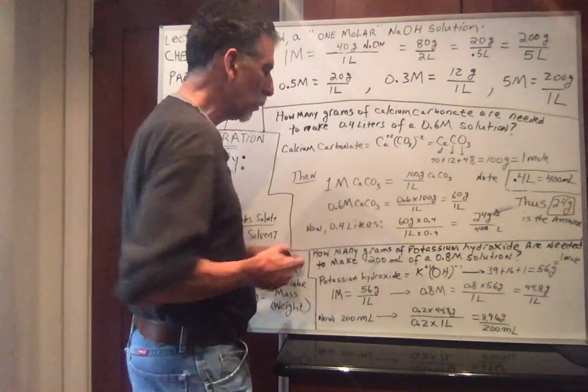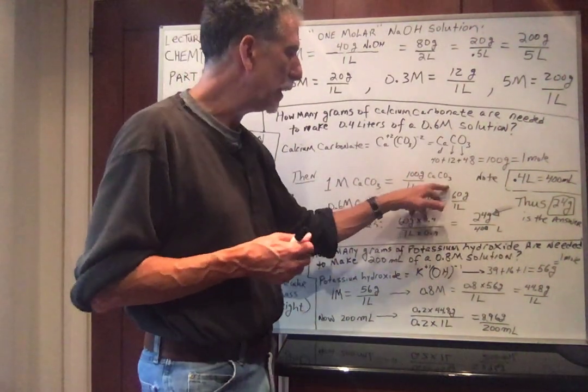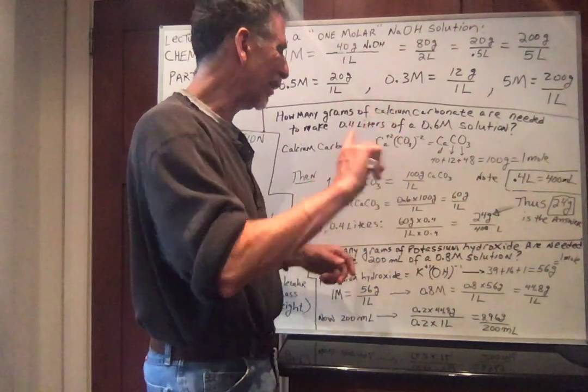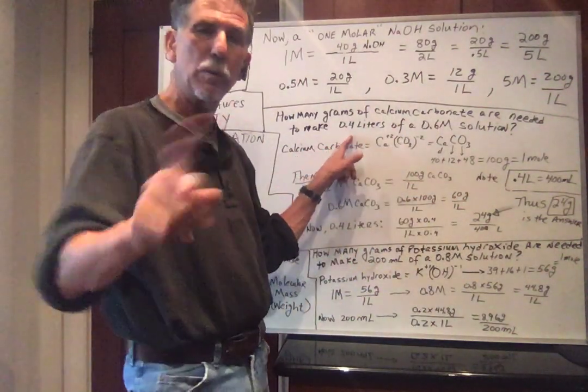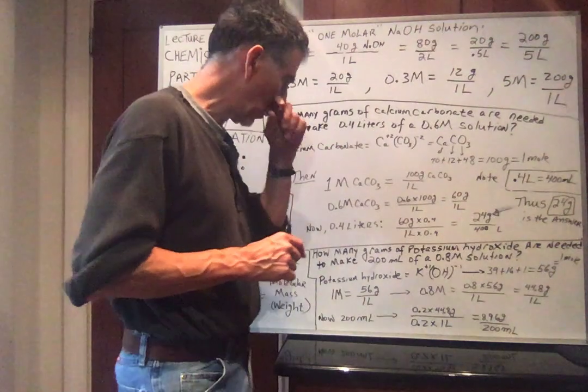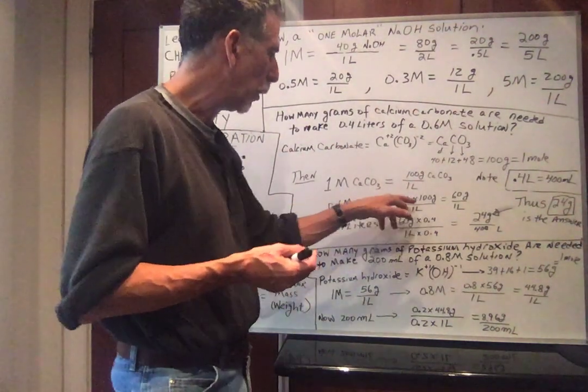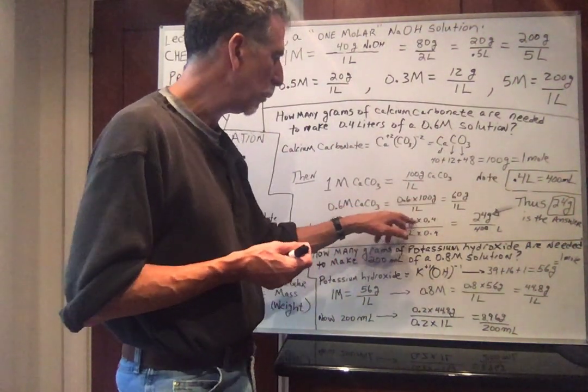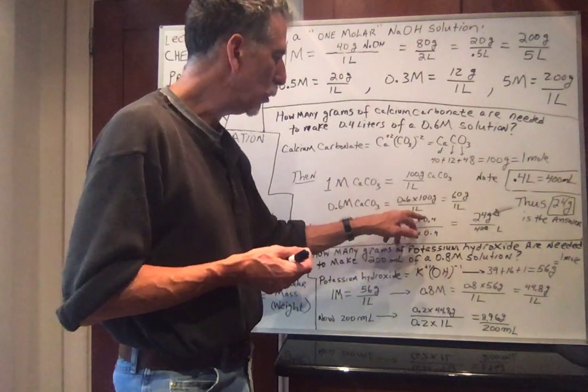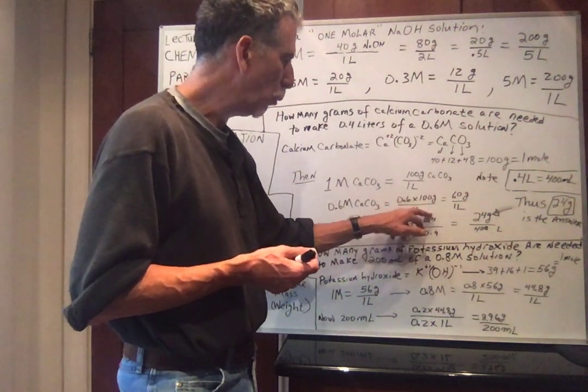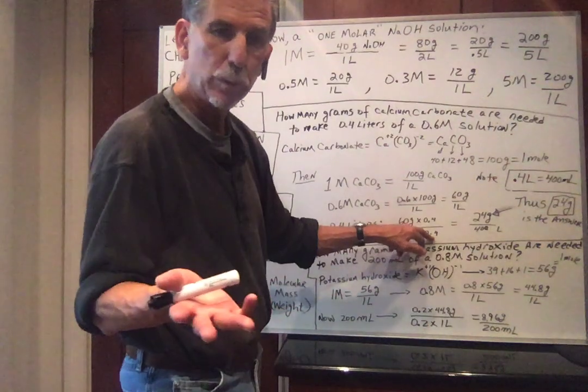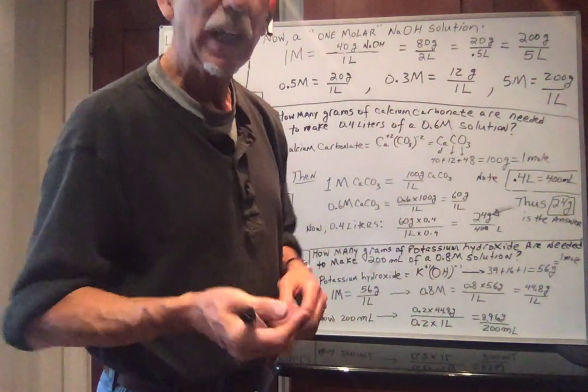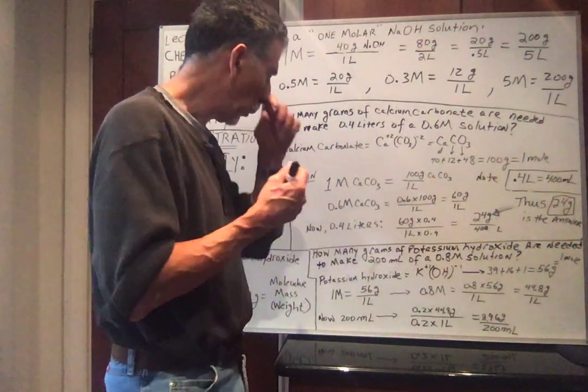All right. So we have 0.6M solution of calcium carbonate is 60 grams in one liter, but I don't want one liter. I want 400 milliliters, 0.4 liters. So we have to just multiply this number by 0.4. So 60 grams times 0.4. And again, you could divide, multiply and divide by one. So 0.4 over 0.4 is one. We're keeping the concentration the same.